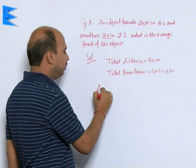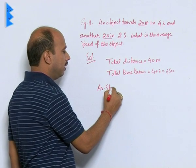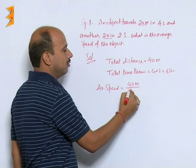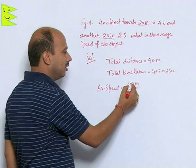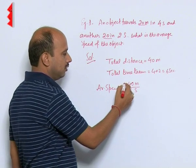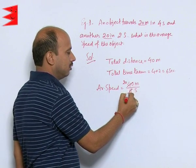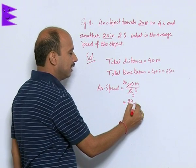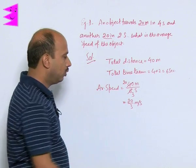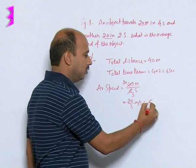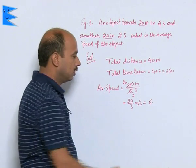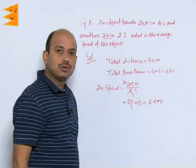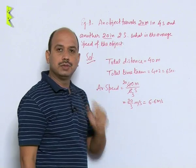Average speed equals 40 meters divided by 6 seconds. We can simplify — cancel to get 20 over 3, which is 20/3 meters per second, or approximately 6.6 meters per second. This is the average speed of the object.